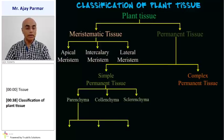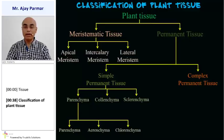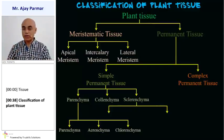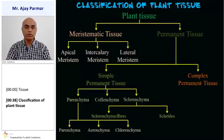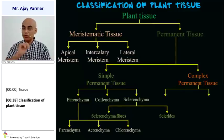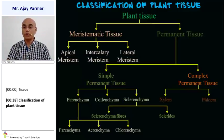Parenchyma is further classified as parenchyma, aerenchyma, and chlorenchyma. Sclerenchyma is further classified into two different types: sclerenchyma fibers and sclerids, also known as stone cells. The complex permanent tissue is classified into two categories — the conducting tissues, which we call xylem and phloem.